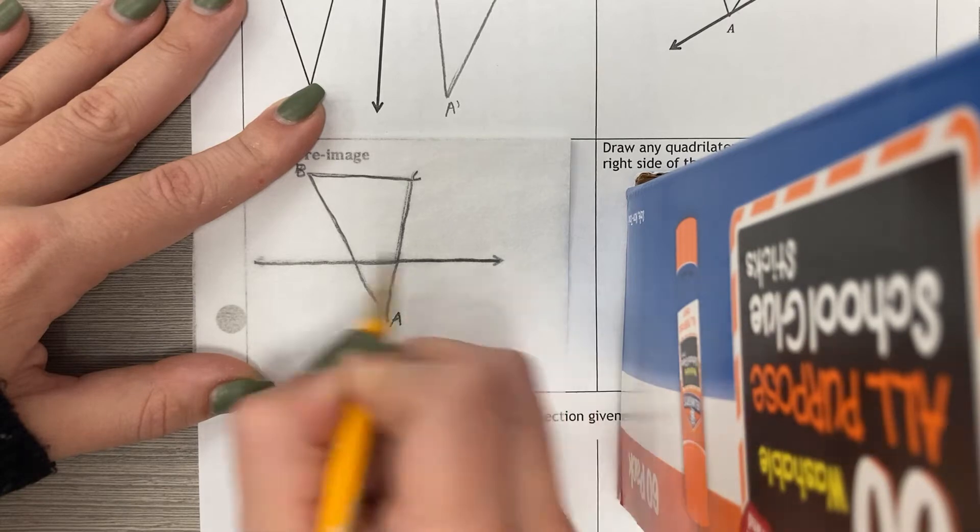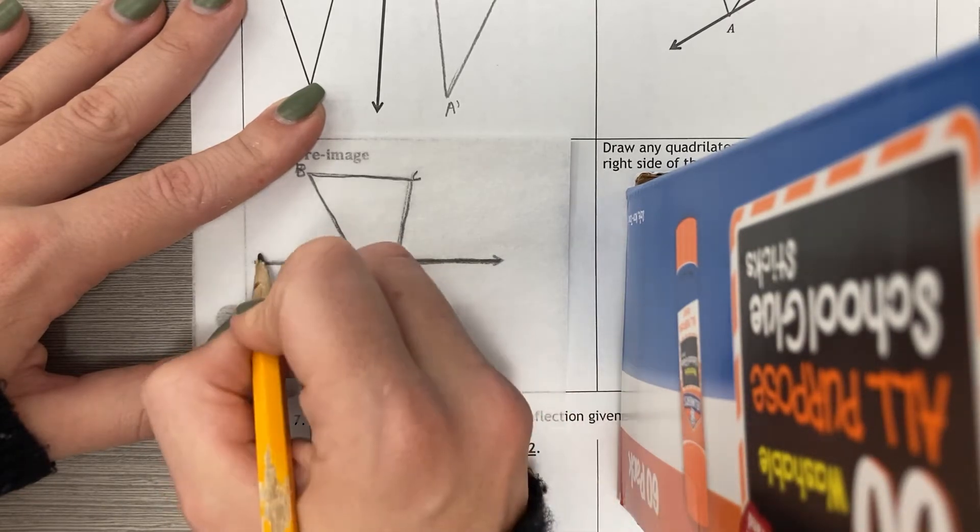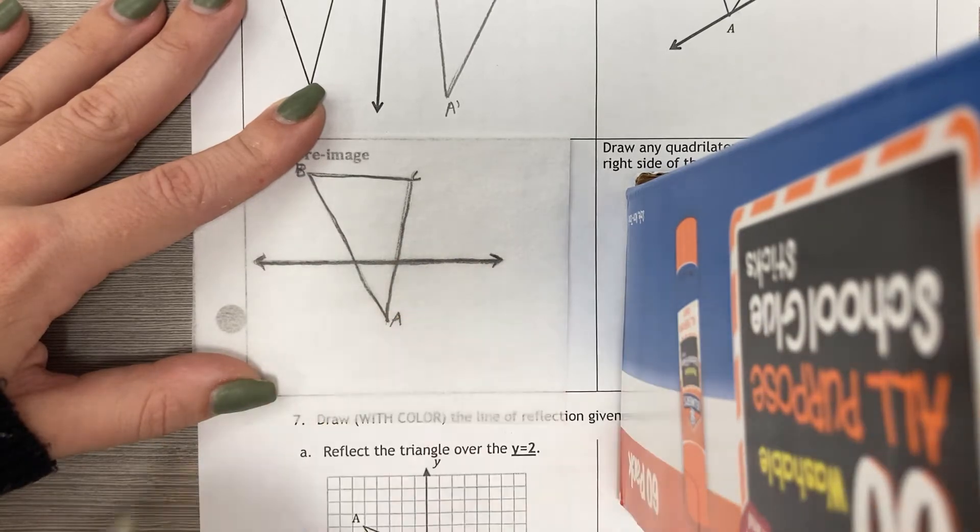Then I'm going to trace the line of symmetry, that line of reflection. I'm going to put the arrows on it to help me line that up perfectly.